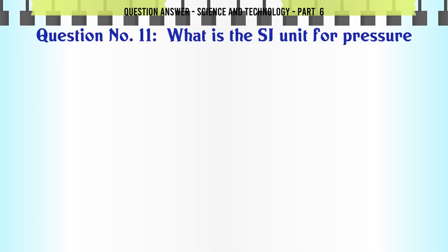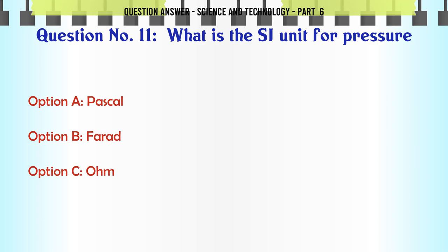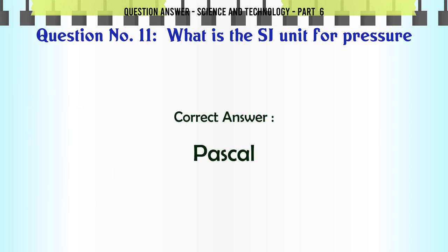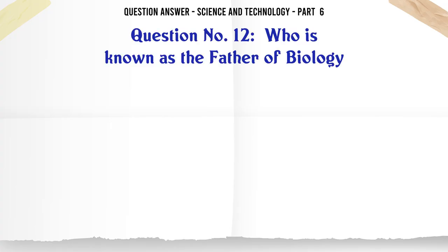What is the SI unit for pressure? A. Pascal. B. Farad. C. Um. D. Joule. The correct answer is Pascal.